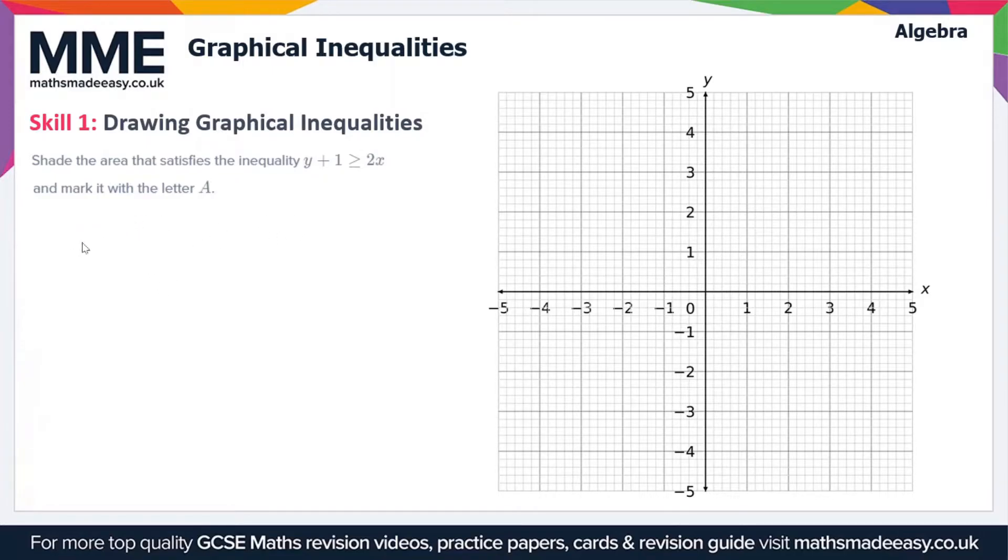Before we get into it, we're just going to have to go through how we represent each of the symbols on the graph. If we have an inclusive inequality such as less than or equal to or greater than or equal to, we represent these with a solid line. If we have a strict inequality, so less than or greater than, these are dashed lines when we draw them on the graph.